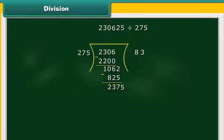The new number formed is 2375. It holds 6 times 275, that is 1650. Subtract and write the difference 725 below. As there are no more digits in the dividend, we come to the end of division operation.